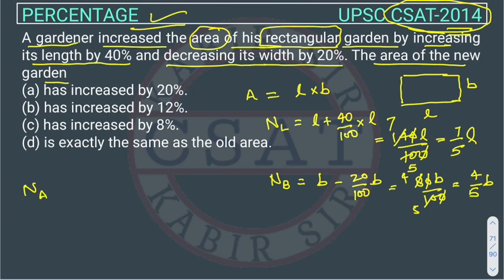So now the new area will be new length into new breadth. New length is 7 by 5L into 4 by 5B, so this will be 28 upon 25LB.